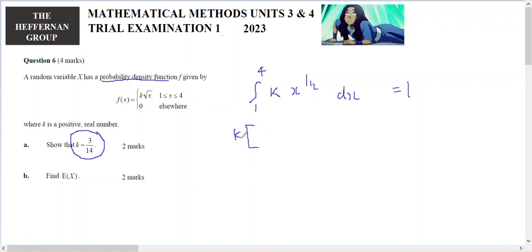So I might bring the k out here, x to the 3 on 2 on 3 on 2, from 1 to 4, should equal 1.